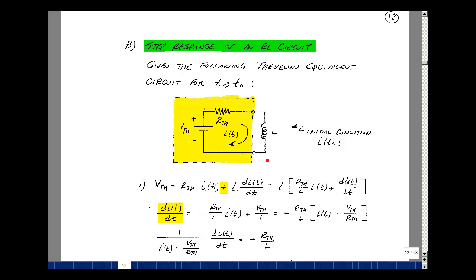In other words, the current cannot jump instantaneously in this inductance. So if we have a switch that changes state at T equals T0, then the current that was flowing in this inductance just before that switch changed state, it must still be the same value. Let's assume that we know the value of this initial condition.